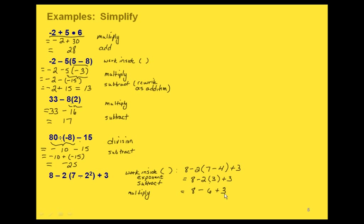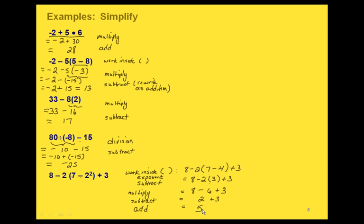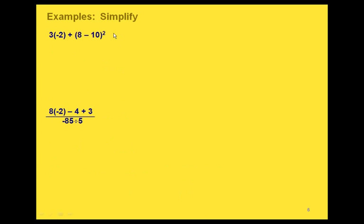So 2 times 3 is 6. Now we have 8 minus 6 plus 3. We just have a subtraction and an addition, and we do those in order from left to right. So 8 minus 6 gives us 2, and then finally we add to get 5.